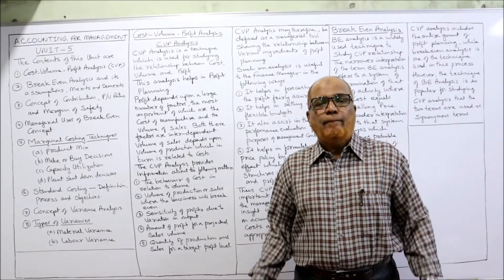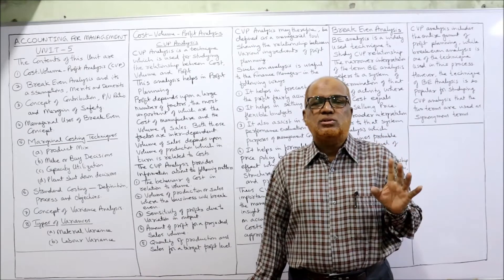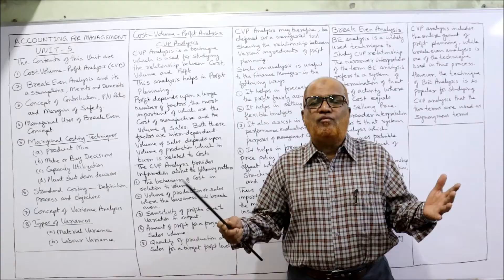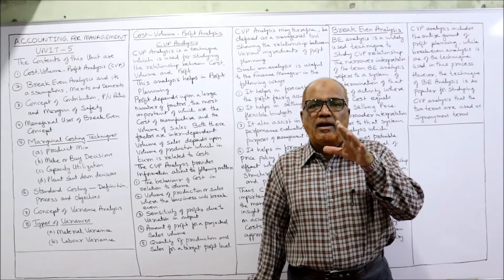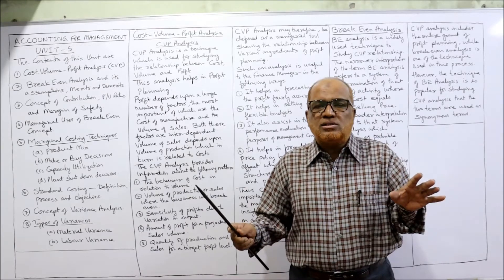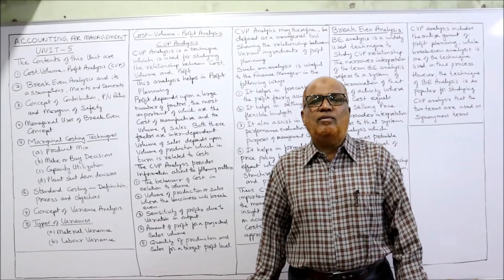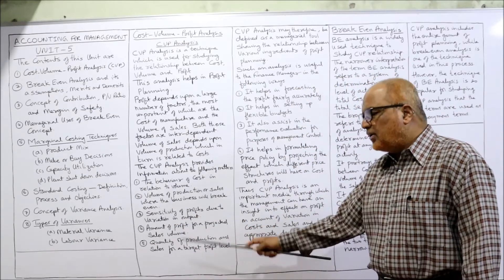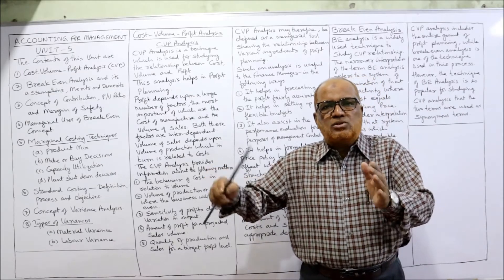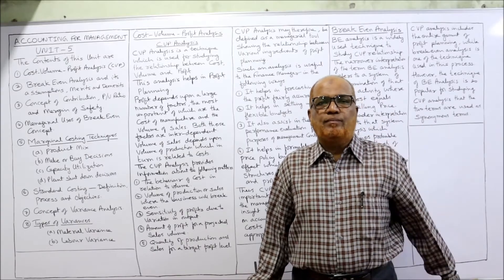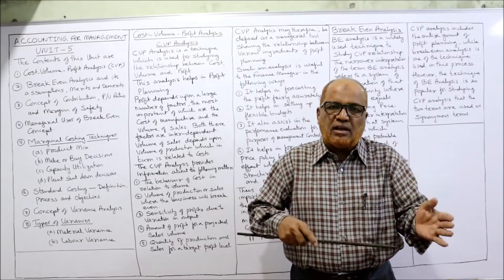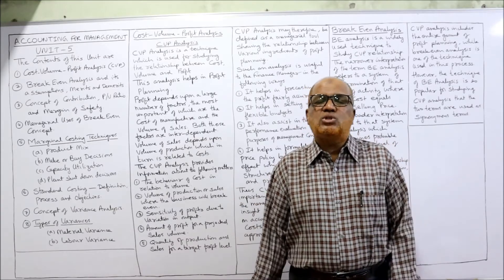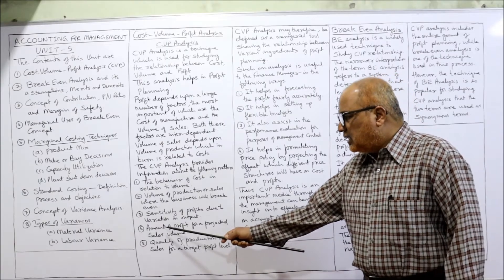Second, the volume of production or sales where the business will break even — break-even means the point of no profit, no loss. Using CVP analysis, we can find the break-even point, i.e., the level of activity at which we neither incur a loss nor make a profit. Third, sensitivity of profit due to variation in output — if sales increase or decrease by 10%, what is the effect on profit? CVP analysis answers this.